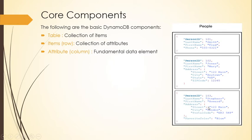In this diagram you can see one table named 'people' with three items. Each item has a different number of attributes. The first item has four attributes: person ID, last name, first name, and phone number. The second item has one additional field: address. The third item has a different attribute: favorite color. This illustrates the schemaless nature of NoSQL — each row can have a different number of columns.